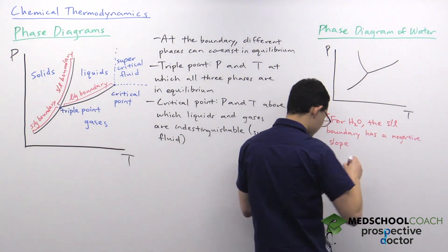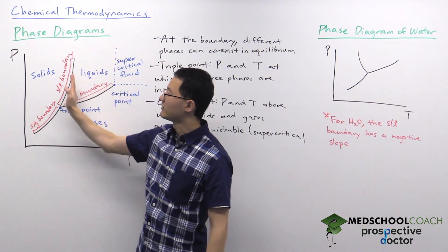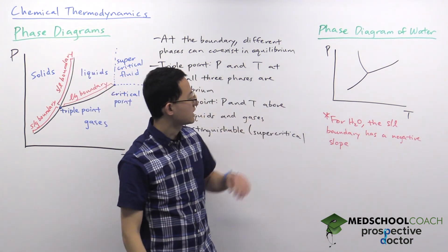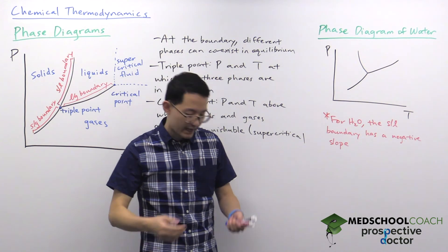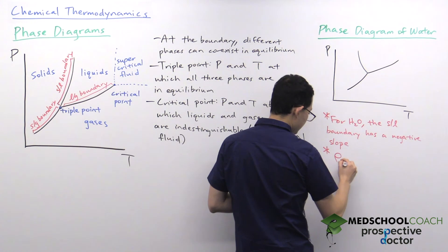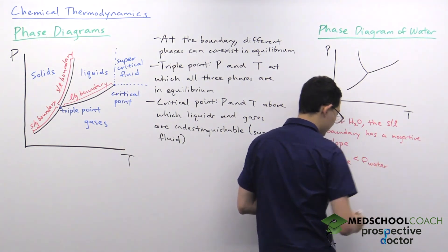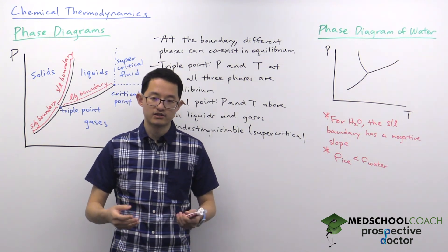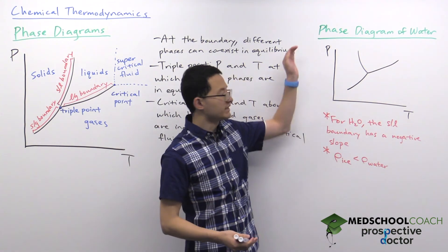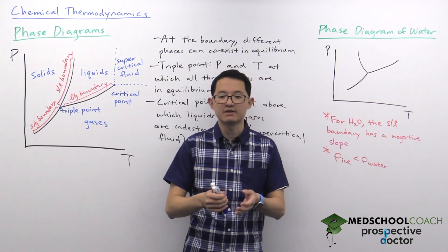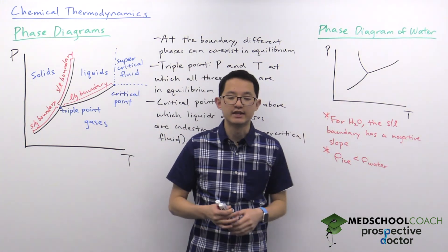For most compounds, increasing the pressure to an extremely high value would, due to the positive slope, favor solids over liquids. But for water that's not the case — since the solid-liquid boundary has a negative slope, increasing the pressure actually favors the liquid state. The reason is that the density of ice is less than the density of liquid water. We know this because ice cubes float in water. Water is more dense than ice, so high pressures compact substances toward the denser form, and since you can't compact ice as much as liquid water, high pressure favors the liquid state of water.